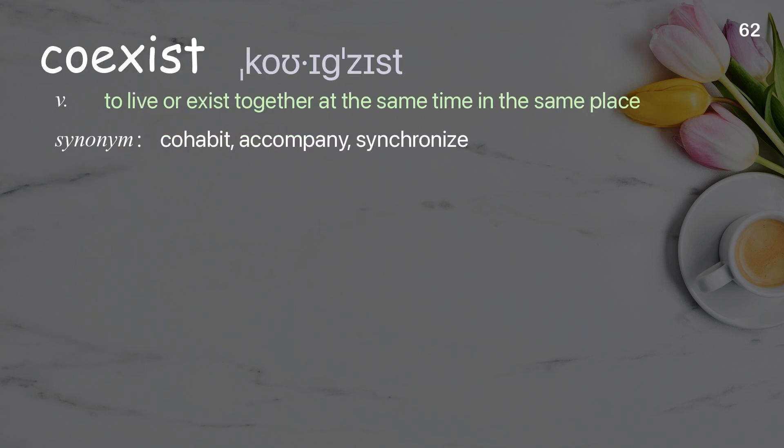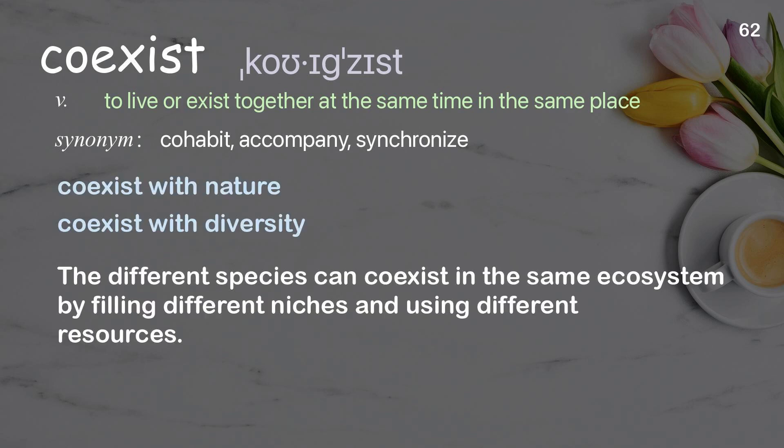Coexist: to live or exist together at the same time in the same place. Examples: coexist with nature; coexist with diversity. The different species can coexist in the same ecosystem by filling different niches and using different resources.